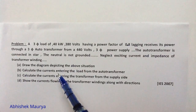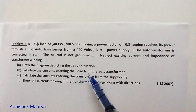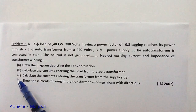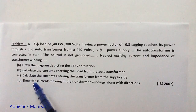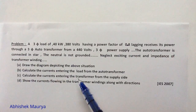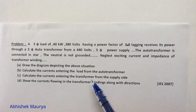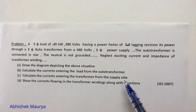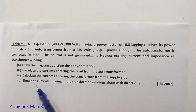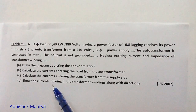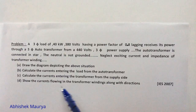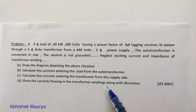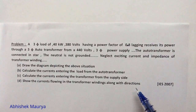In the first part, we have to draw the diagram depicting the above situation. In the second part, we have to calculate the currents entering the load from the autotransformer. In the third part, we have to calculate the currents entering the transformer from the supply side. In the fourth part, we have to show the currents flowing in the transformer windings along with the directions.